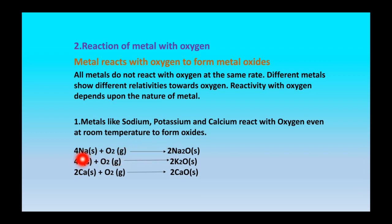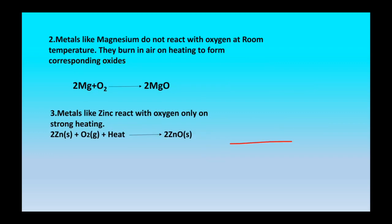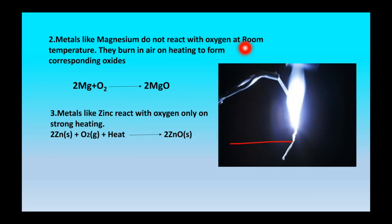When sodium reacts with oxygen it forms sodium oxide; when potassium reacts with oxygen it forms potassium oxide; when calcium reacts with oxygen it forms calcium oxide. So whenever a metal reacts with oxygen it forms its corresponding oxide. Metals like magnesium do not react with oxygen at room temperature — they burn in air on heating to form corresponding oxides.